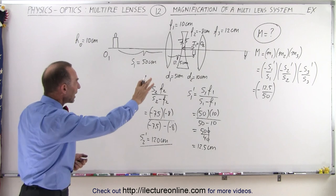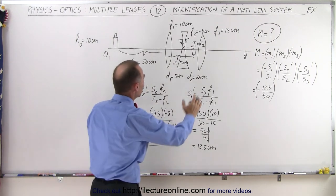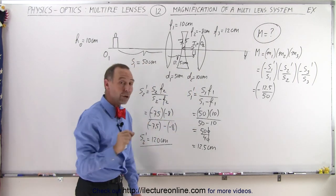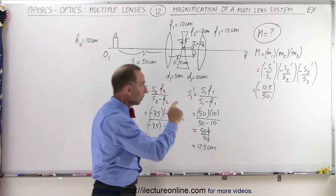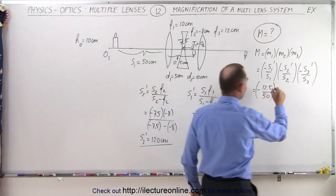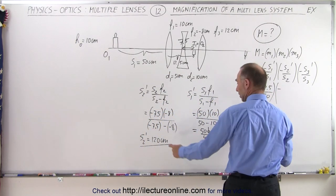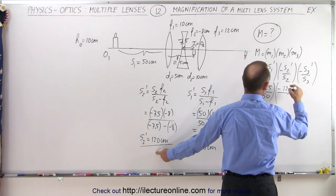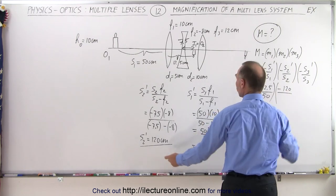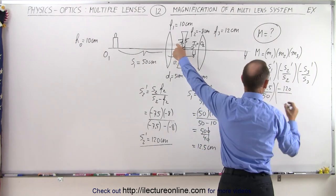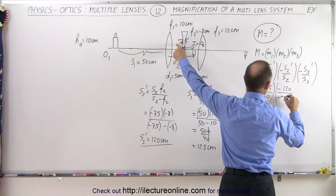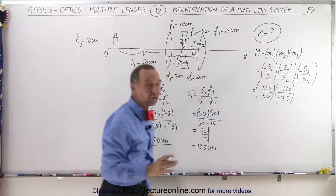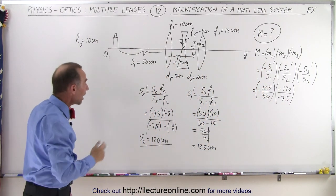So the second image is 120 centimeters behind the second lens. Now we can go ahead and calculate the magnification from the second lens: M2 equals minus positive 120 divided by s2, which was negative 7.5.